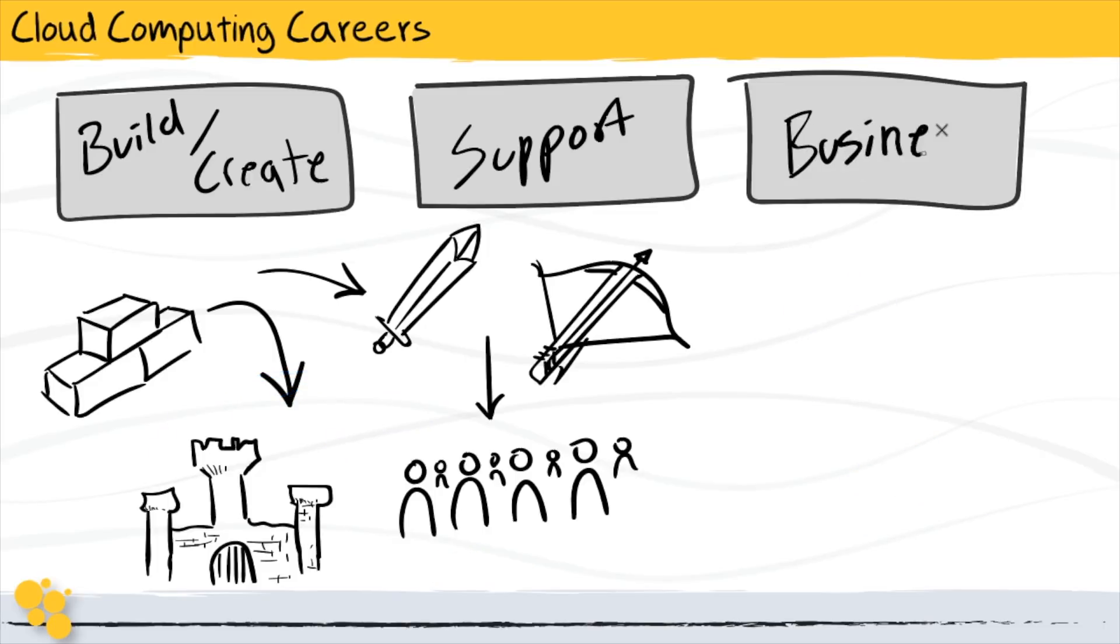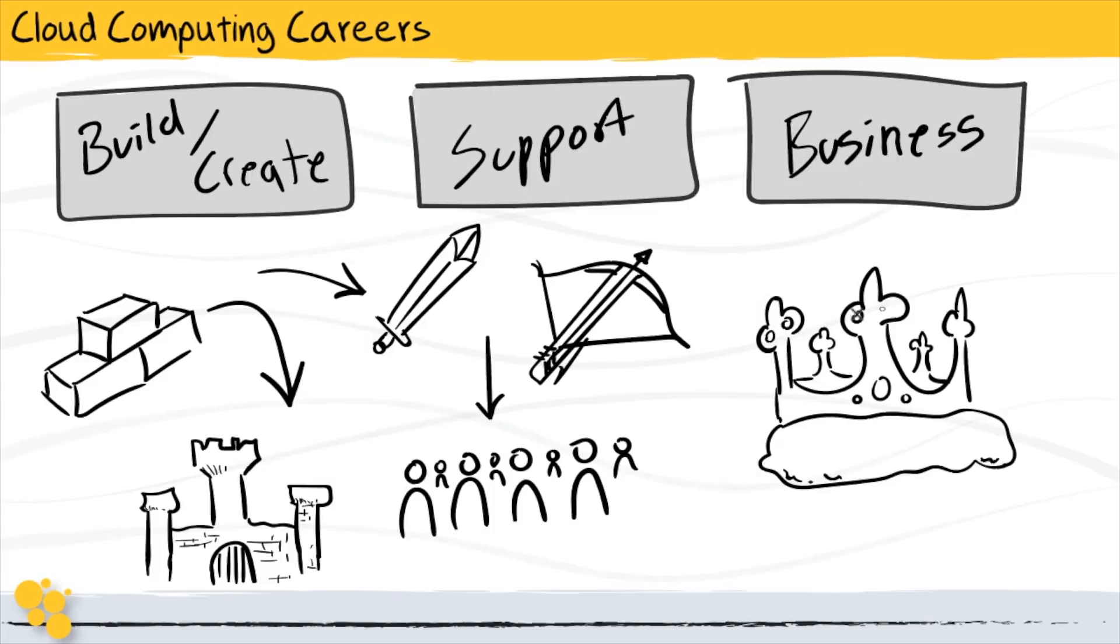That brings me to the final category, which is the business support side of things. Just like a king or ruler would require advisors to help inform about the goings-on of the kingdom and inform his decisions, we find governance, audit, and service management roles within organizations, making sure that these individual teams are all working together in concert to support business objectives.